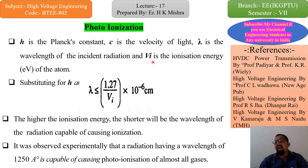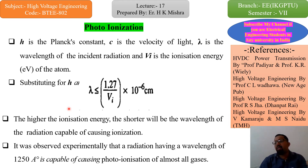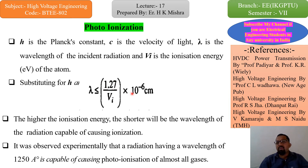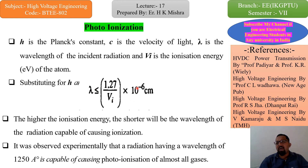Here, c is the velocity of light, lambda is the wavelength of the incident radiation, and Vi is the ionization energy in electron volts of the atom. Substituting for h (Planck's constant — you can search its value on Google and put it into the previous equation), lambda becomes less than or equal to 1.27 divided by Vi, times 10 to the power minus 6 cm. This is the final condition for photo ionization to occur. If lambda is known, Vi (ionization potential) can be calculated.